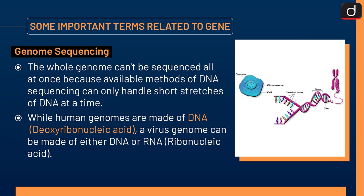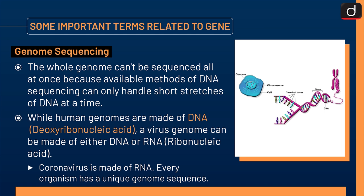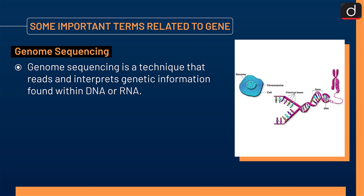Coronavirus is made of RNA. Every organism has a unique genome sequence. Genome sequencing is a technique that reads and interprets genetic information found within DNA or RNA.